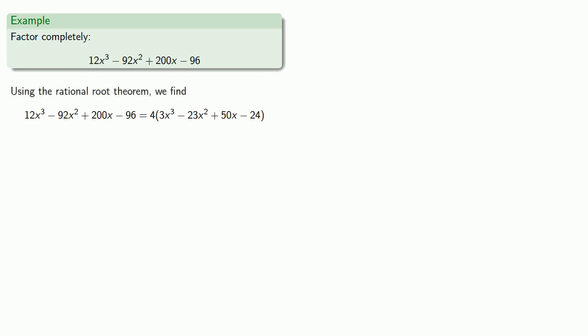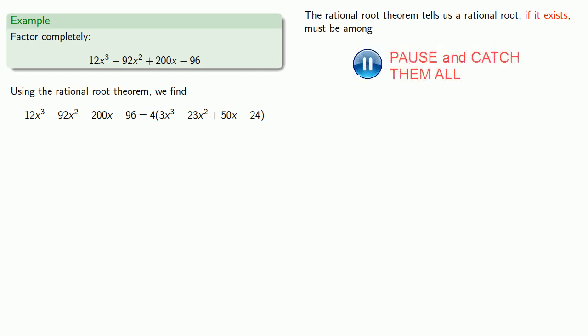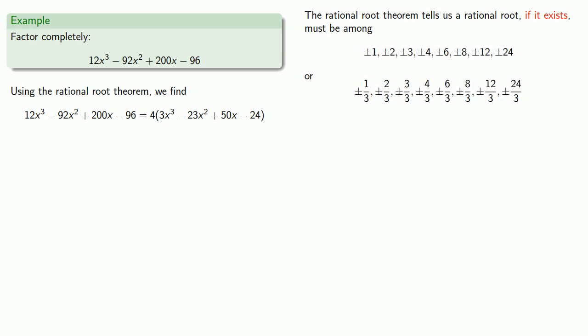So now we'll use our rational root theorem. The rational root theorem tells us that a rational root, if it exists, must be among a rather long list of possibilities. And unfortunately, there's nothing we can do but to try every single possibility until we find a root. So again, we'll use synthetic division and find the remainder when we divide by x minus a potential root. So we'll set up our synthetic division table and list the roots that we're going to test. And we'll try them out from easiest to hardest.